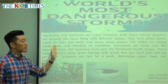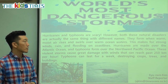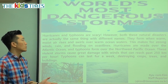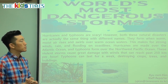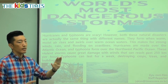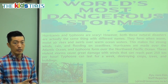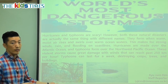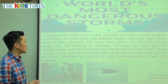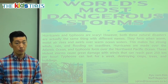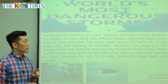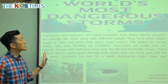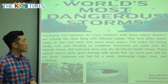So hurricanes and typhoons — they're the same thing. They just have two different names, kind of like ocean and sea are the same thing but have two different names. Natural disasters means it happens in nature. Disaster means something that is very dangerous and can destroy. Other natural disasters can be earthquakes and tornadoes. But the scariest are hurricanes and typhoons.